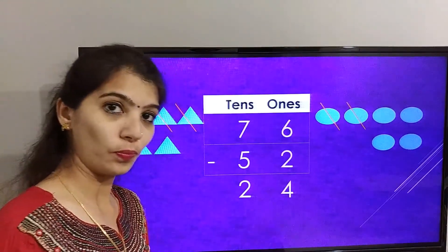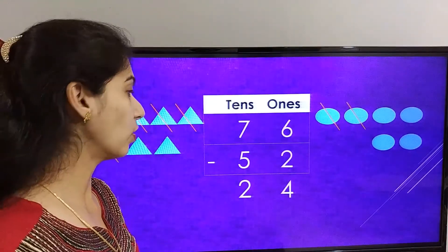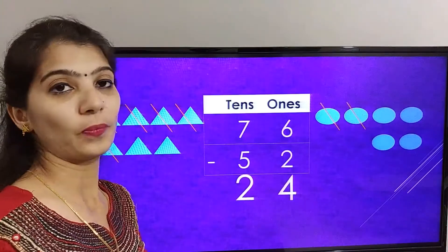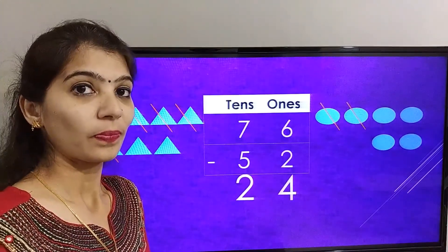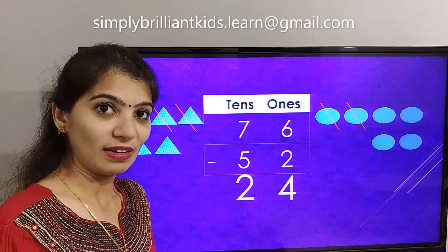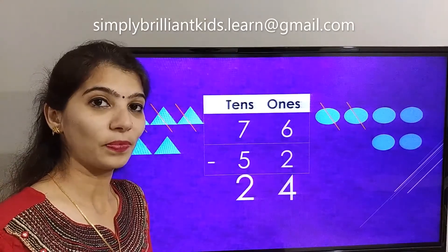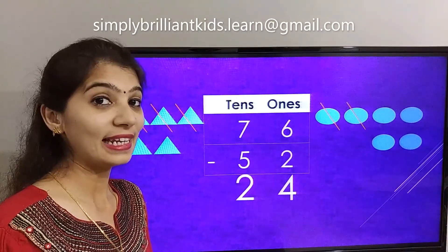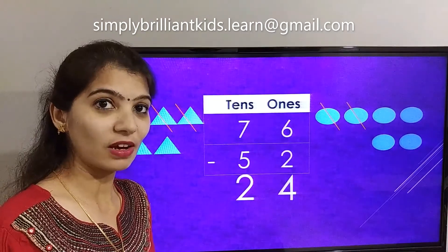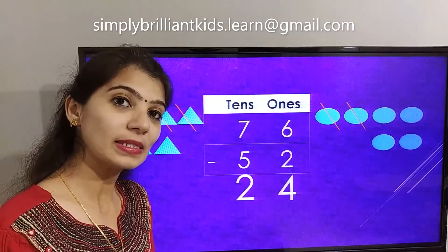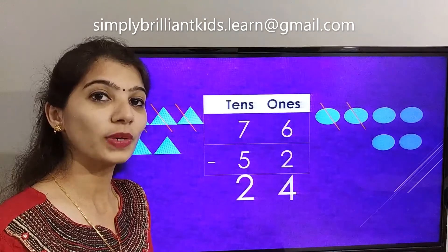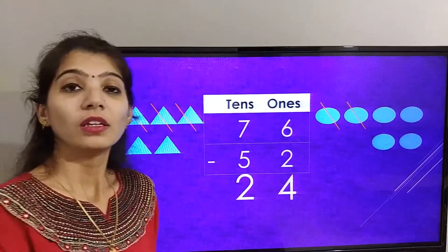So the final answer we got is 24. Now on the next screen, I'm going to share a sum which you need to solve on your own. Let's see who can give me the correct answer in the comments below, or you can email it to me. So the sum is 65 minus 32.